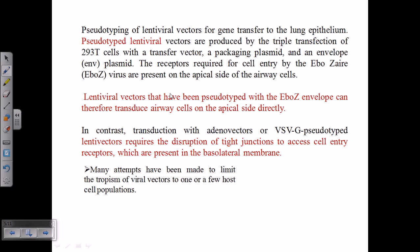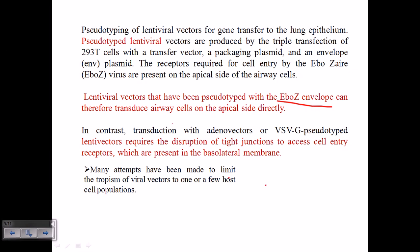Lentiviral vectors pseudotyped with the EBOV-Z envelope can be used for airway cells and airway epithelial sites. There is also an example of VSB-G gene pseudotyped lentiviruses, which can similarly be used for gene delivery. These lentiviruses require disruption of tight junctions to access cell receptors, and their receptors are present on the basolateral membrane.